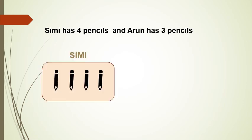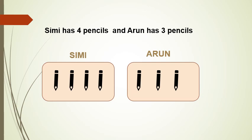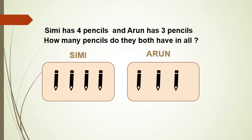Now let's see one question. Simi has 4 pencils and Arun has 3 pencils. How many pencils do they both have in all? Can you see? How can you get the answer? Now let's count and find the answer. First count the number of pencils that Simi has: 1, 2, 3, 4. Now we can count the number of pencils that Arun has: 5, 6, 7. So they have 7 pencils in all.